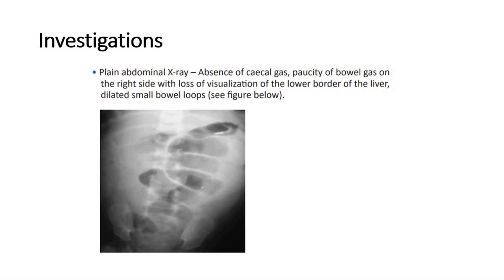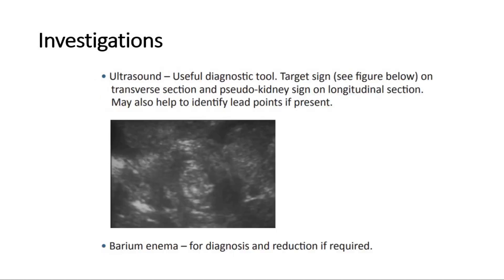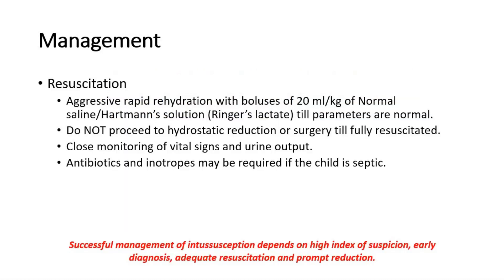For investigations, we can do a plain abdominal X-ray. This picture shows the absence of cecal gas, paucity of bowel gas on the right side with loss of visualization of the lower border of the liver, and dilated small bowel loops, suggesting a small bowel intestinal obstruction. Ultrasound of the abdomen is also a useful diagnostic tool — this picture shows the target sign on transverse section, caused by the distal bowel invaginating into the proximal bowel. Barium enema can also be done for diagnosis and reduction.